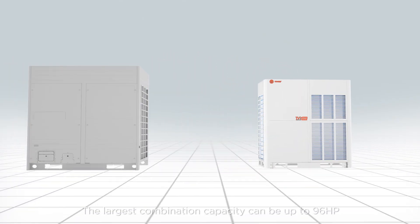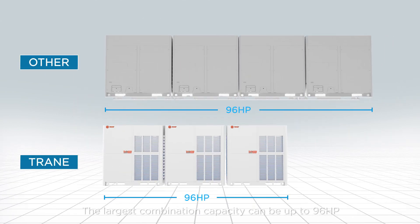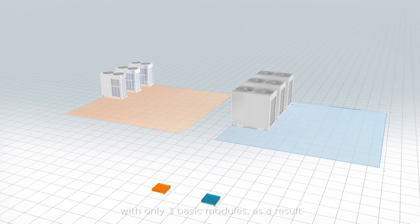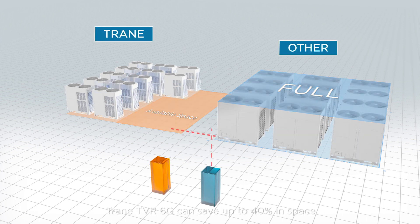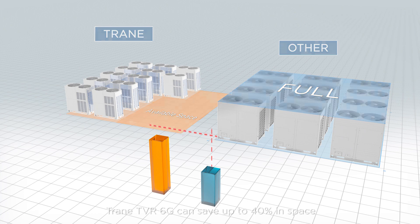The largest combination capacity can be up to 96 HP with only 3 basic modules. As a result, with the same capacity range, TrainTVR 6G can save up to 40% in space.